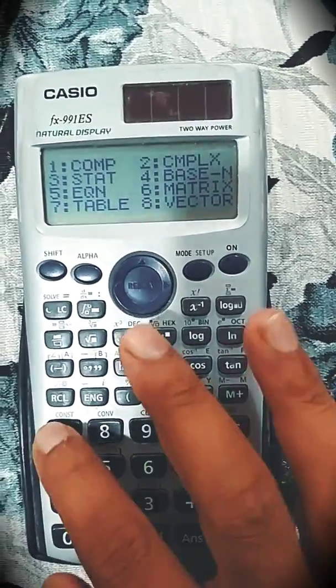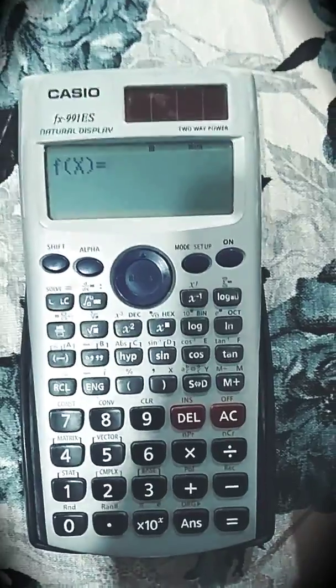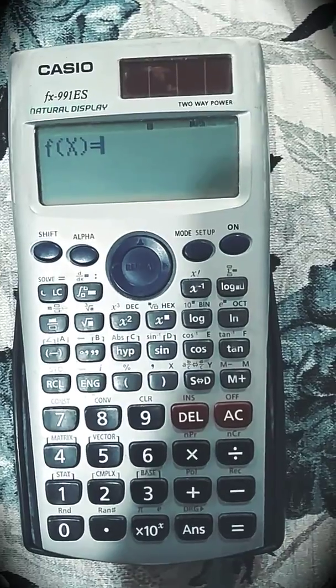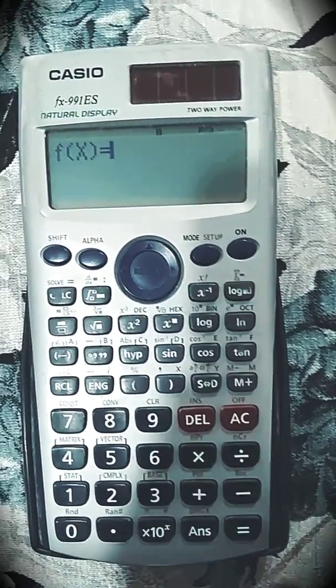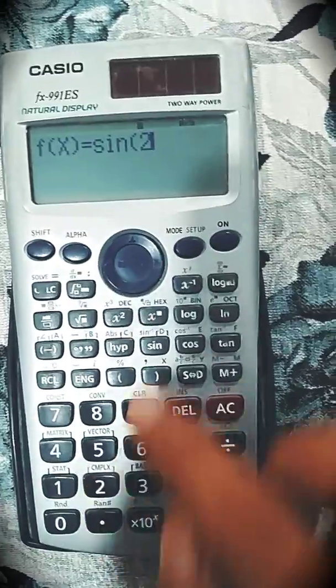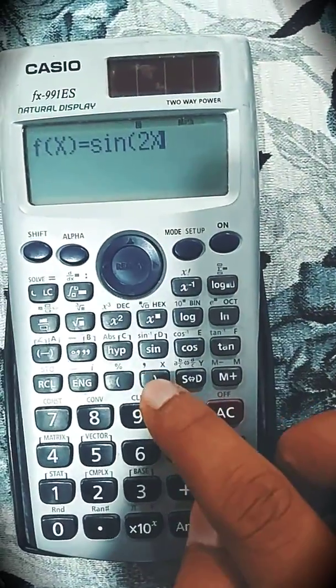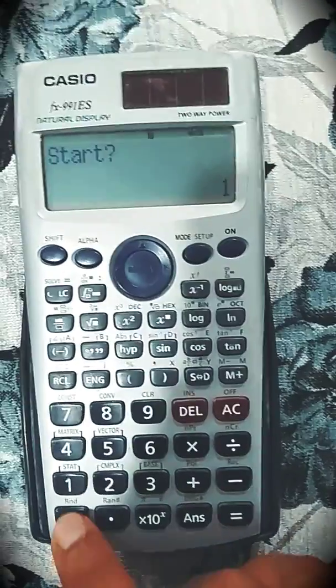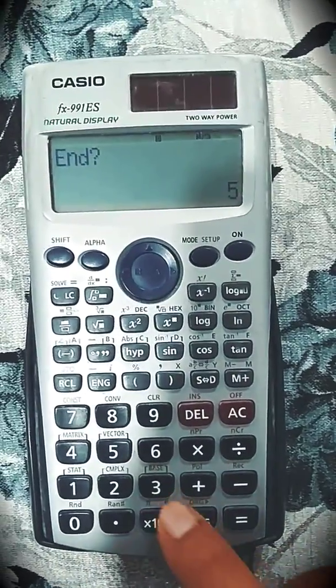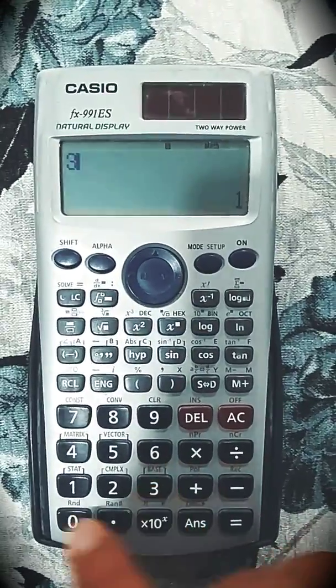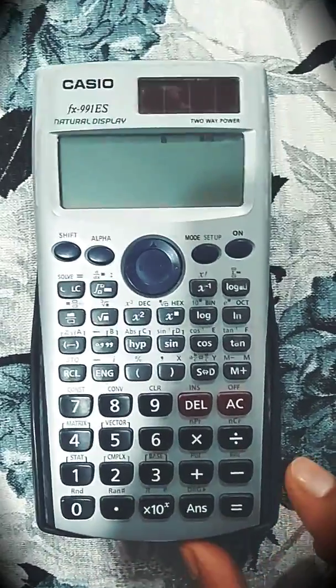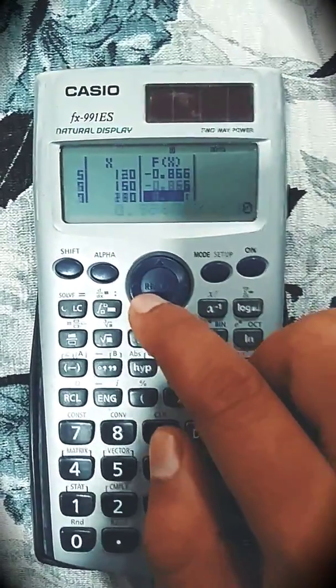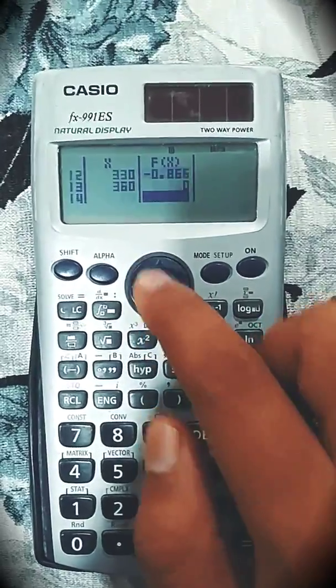Then next mode is table mode, which is very useful one. You have to put the function, and then you have to put the range and the width in between these two values. So let's take one example, that is sin 2x. So sin 2x is the function, press equal to. I want to start from 0, I want to end at 360 degrees, and the difference of angle is 30 degrees. You will get directly the table with all values up to 360 degrees with the equal interval of 30.